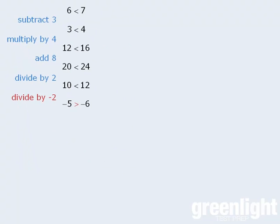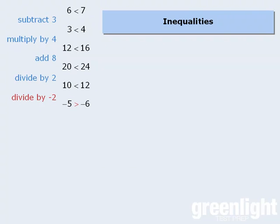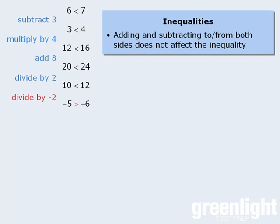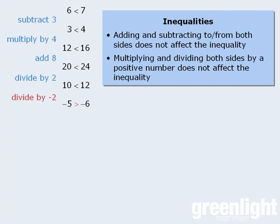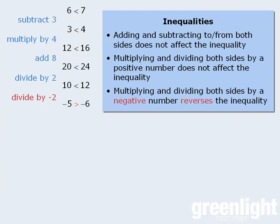From these observations, we can make some general conclusions about inequalities. First, adding and subtracting the same number to or from both sides does not affect the inequality. Second, multiplying and dividing both sides by a positive number does not affect the inequality. And finally, multiplying and dividing both sides by a negative number reverses the inequality.